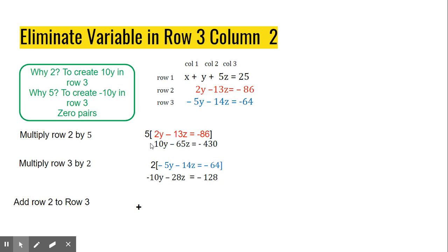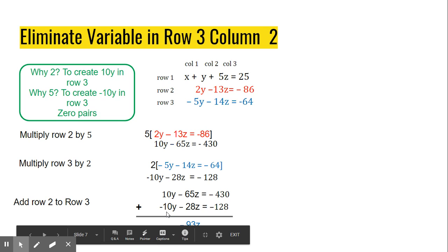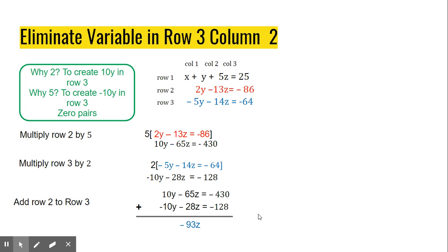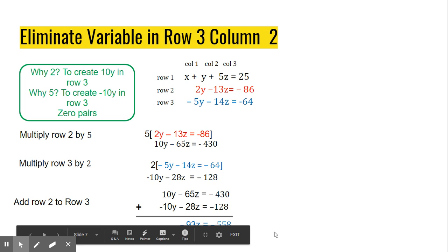All right. So I'm going to add those two rows, my two modified rows. 10y minus 65z is equal to negative 430 and negative 10y minus 28z is equal to negative 128. I'm going to add those two rows together and 10y minus 10y cancels out. Great. Exactly what we were trying to do. When I add negative 65z to negative 28z, I end up with negative 93z. And when I add these two, the constants, I end up with negative 558.